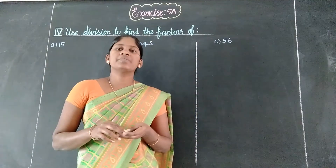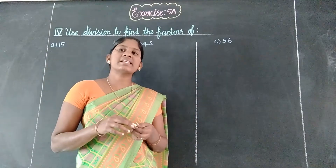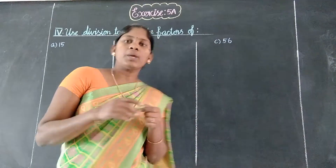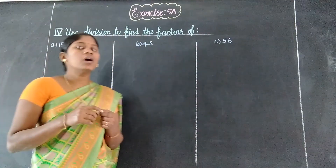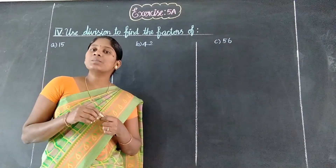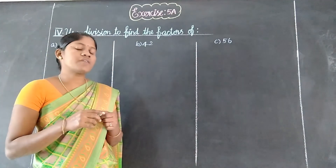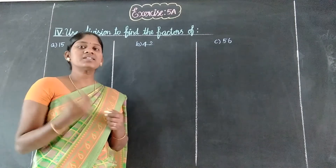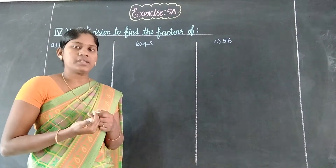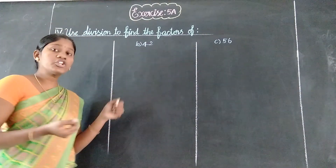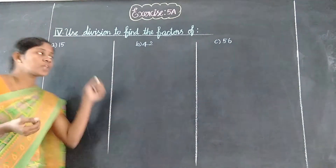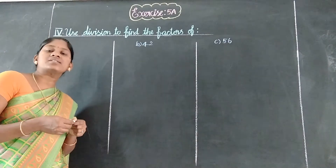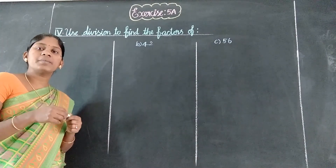Welcome students. Exercise 5A, 4th Roman: use multiplication to find the factors — multiplication method used. Factors, every point is present. Now 4th Roman: use division to find the factors — division method.